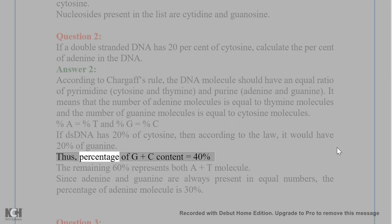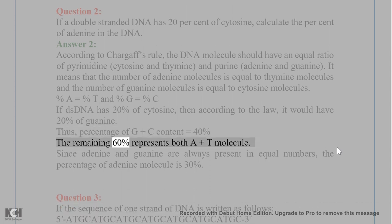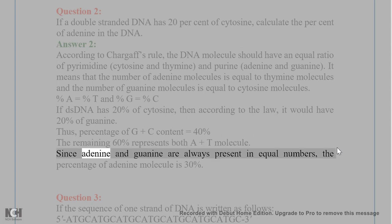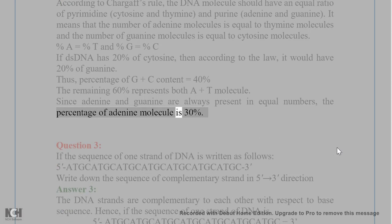Thus, the percentage of G plus C content equals 40%. The remaining 60% represents both A plus T molecules. Since adenine and thymine are always present in equal numbers, the percentage of adenine is 30%.